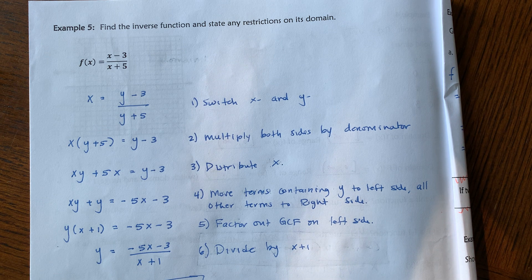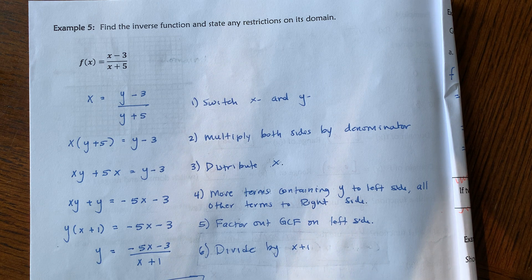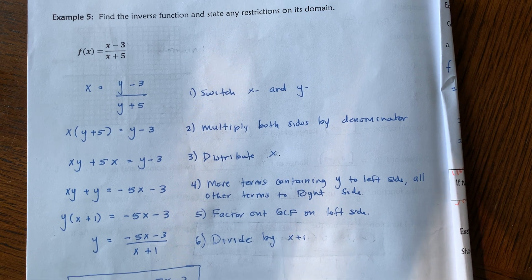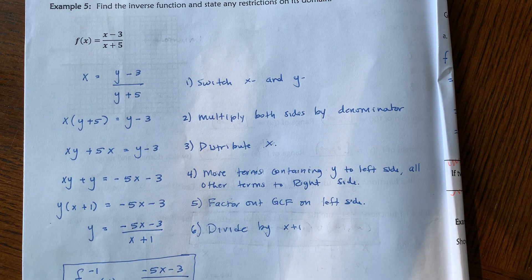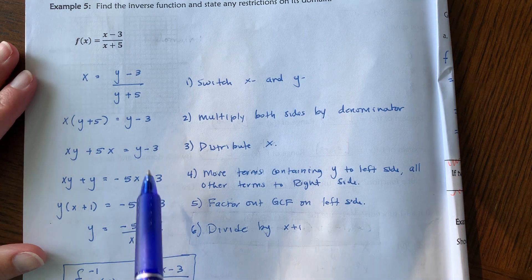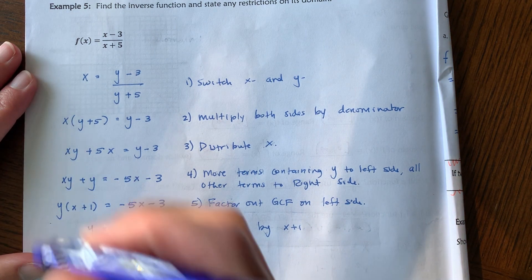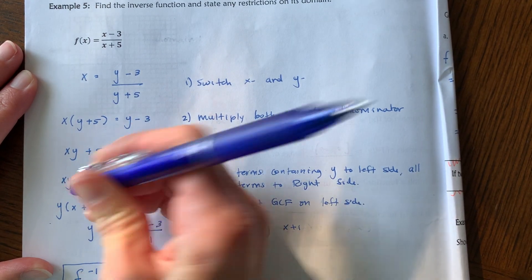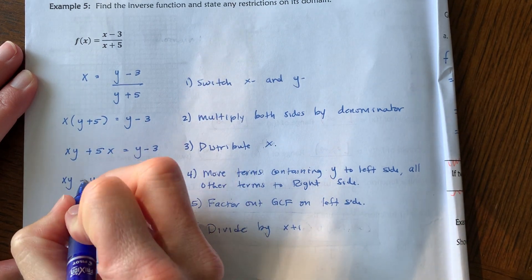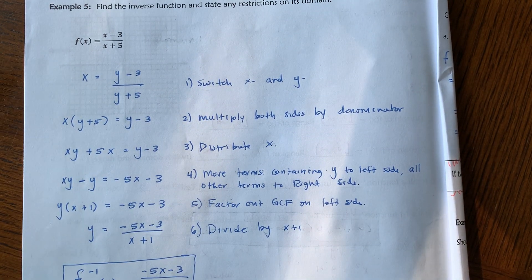We have a y on the left side and a y value on the right side — we need to combine that together as a single y. In order to do that, we're going to move the terms containing y to the left side and all other terms to the right side. If I subtract y from both sides, then we have xy minus y equal to negative 5x plus 3.